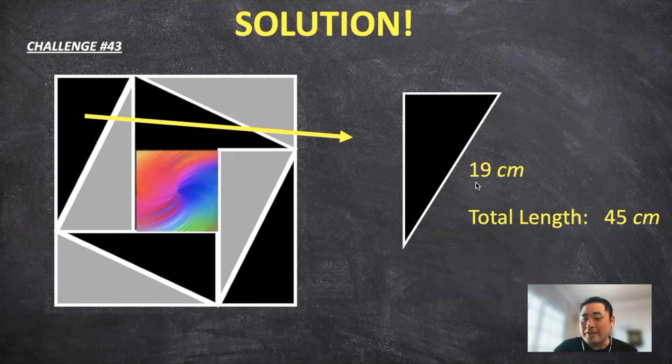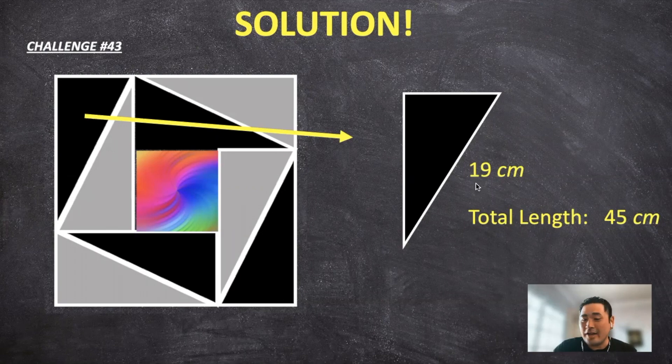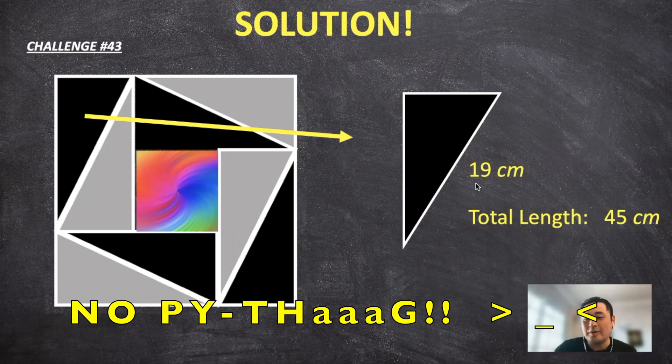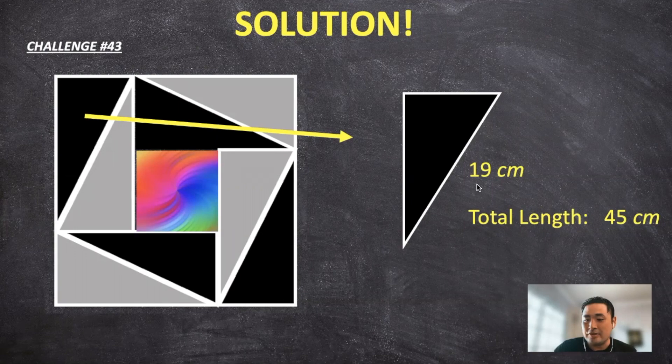since this is an elementary school problem, we cannot use Pythagorean theorem. So let's get away from thinking a squared, b squared equals c squared, and think about it from an elementary student standpoint. Okay, so the longest length is 19 centimeters here, and we know that the total length is equal to 45 centimeters.